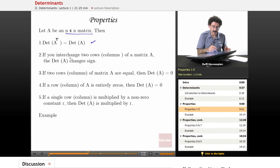If you have a matrix and you interchange two rows or two columns, the determinant changes sign. So it goes from positive to negative, negative to positive. If two rows or columns of a matrix are equal, then the determinant equals zero. Nice and simple. If a row or a column of A is entirely zeros, then the determinant is equal to zero.